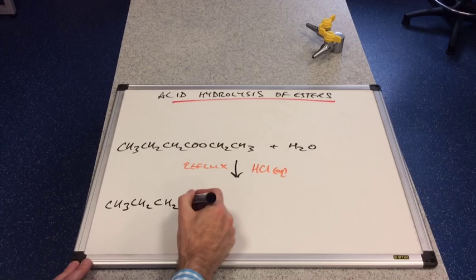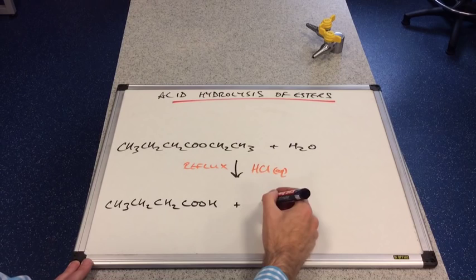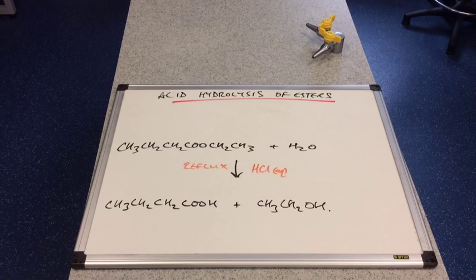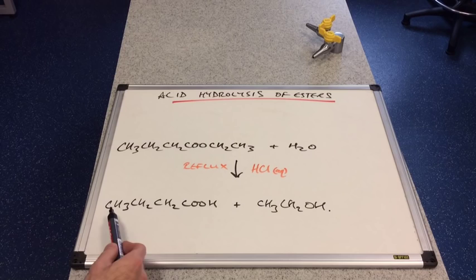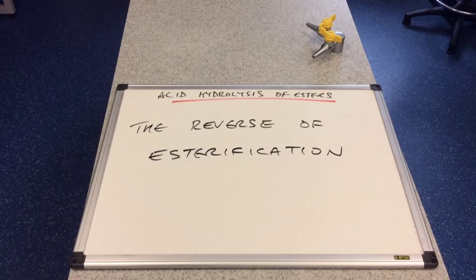So we're going to get CH3, CH2, CH2, COOH and we're going to get the alcohol, CH3, CH2, OH. So if you acid hydrolyze ethyl butanoate, you're going to make butanoic acid and ethanol.